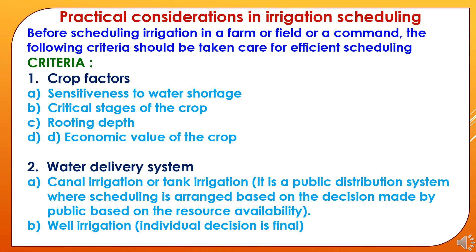Now we will study practical considerations in irrigation scheduling. Before scheduling irrigation in a farm, field, or command, the following criteria should be taken care of for efficient scheduling. The first criterion is the crop factor, which includes: sensitiveness to water shortage, critical stages of the crop, rooting depth, and economic value of the crop.